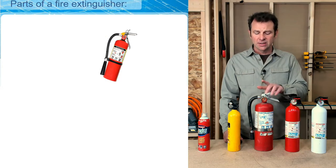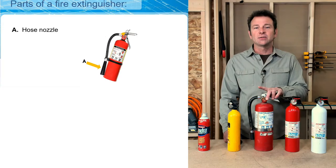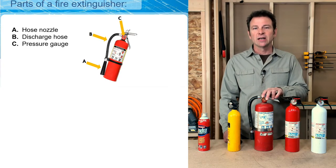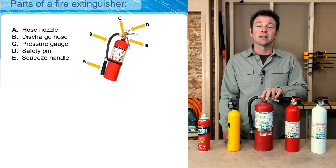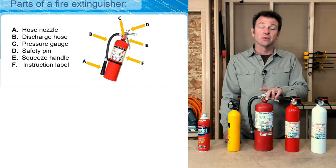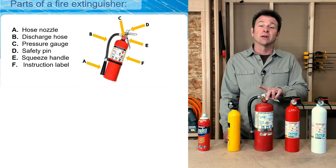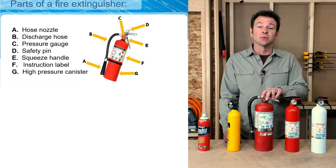Let's go over the common parts of a fire extinguisher. Most will have a nozzle and a discharge hose. You'll see a pressure gauge on many extinguishers. There's a safety pin that must be pulled before use, and a squeeze handle that releases the contents through the nozzle. There's also an instruction label with information on how and where to use the extinguisher, and a pressure canister that holds the contents used to treat the fire.